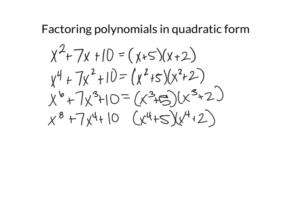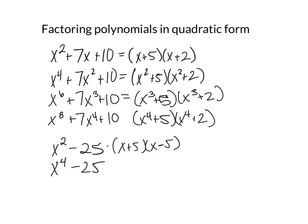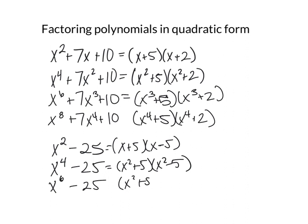So it looks like our trinomials that we factored, and the first terms in our factors are just higher degree — whatever the middle term's variable is. This is true also for difference of squares. If we have x squared minus 25, that's x plus 5 times x minus 5. For x to the 4th minus 25, that would be x squared plus 5 times x squared minus 5. And you can keep going to the 6th: x cubed plus 5 times x cubed minus 5.